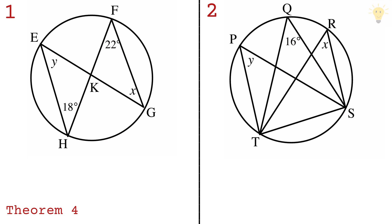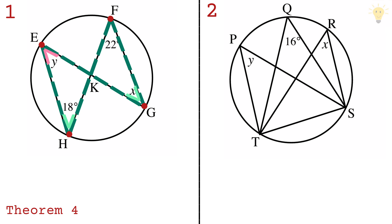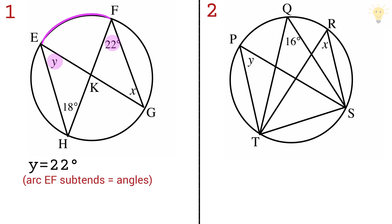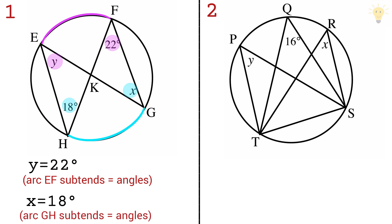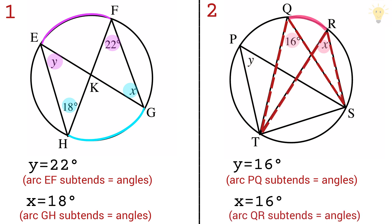Theorem 4 states that an arc or chord of a circle subtends equal angles at the circumference — angles in the same segment are equal. In example 1, the value of y is 22 degrees (arc EF subtends equal angles) and x is 18 degrees (arc GH subtends equal angles). In example 2, y is 16 degrees (arc PQ subtends equal angles) and x is also 16 degrees (arc QR subtends equal angles).